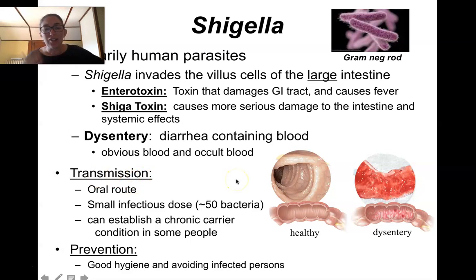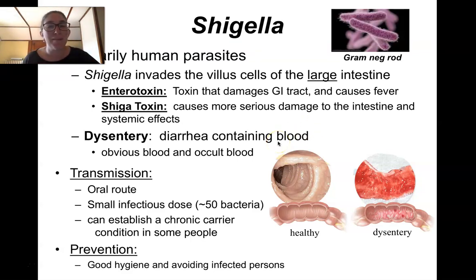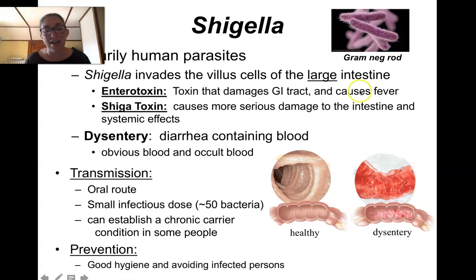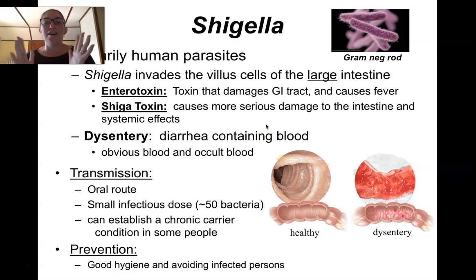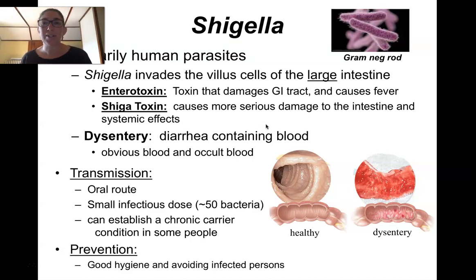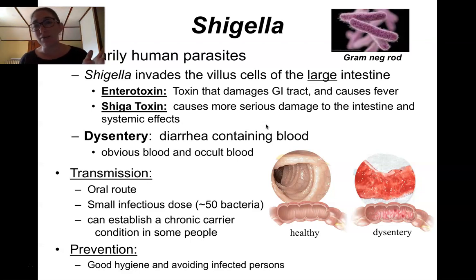Shigella has a smaller infectious dose than Salmonella, so if you come into contact with a carrier you're more likely to get it. Again, just like Salmonella, there are people out there who are asymptomatic carriers — they don't have the disease themselves but can still transmit it when preparing food. For all of these gastrointestinal infections, a very standard form of prevention is good hygiene: handwashing before preparing food and before eating, as well as good cooking practices. All of these bacteria are susceptible to death by heating, so cooking food to proper temperatures kills any contamination.